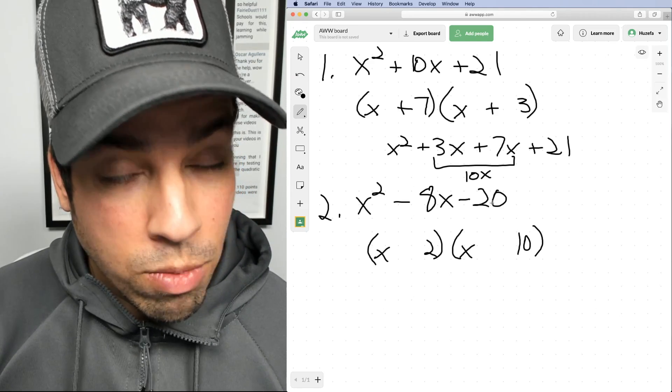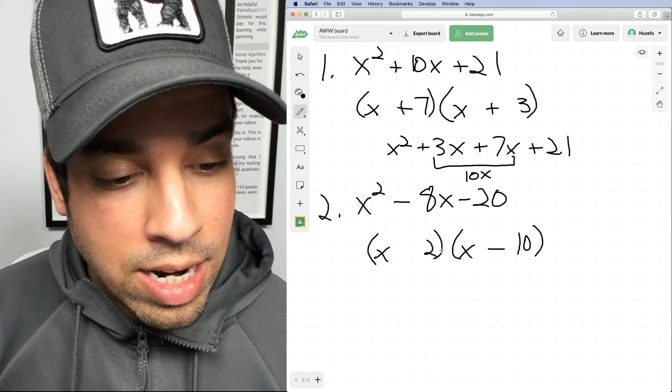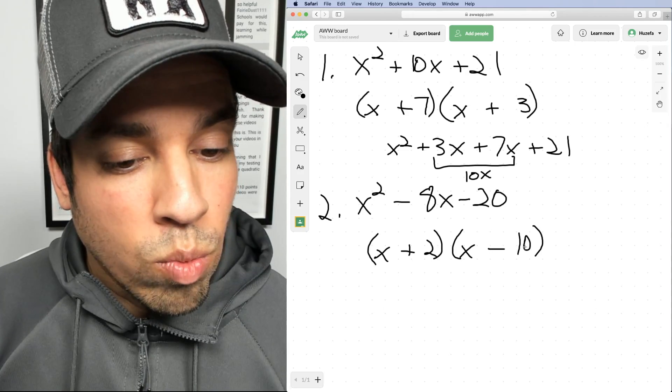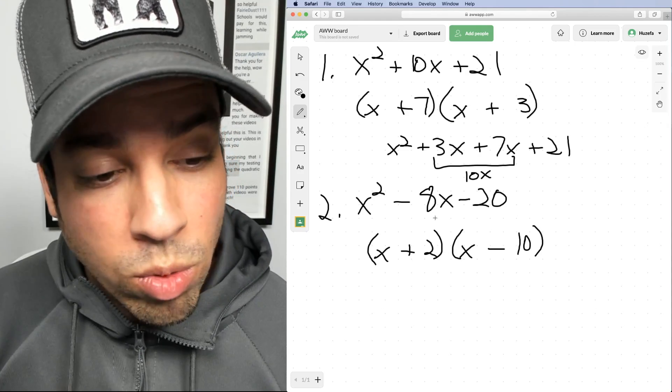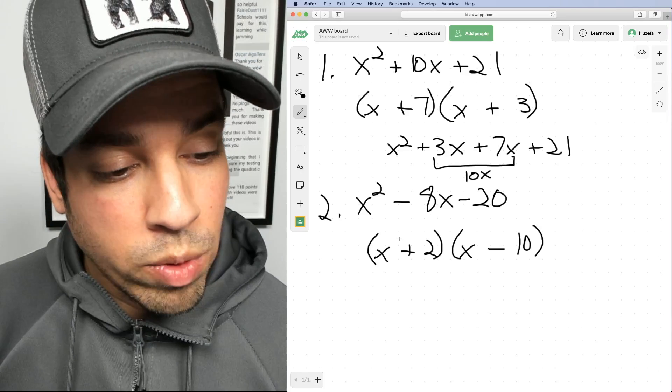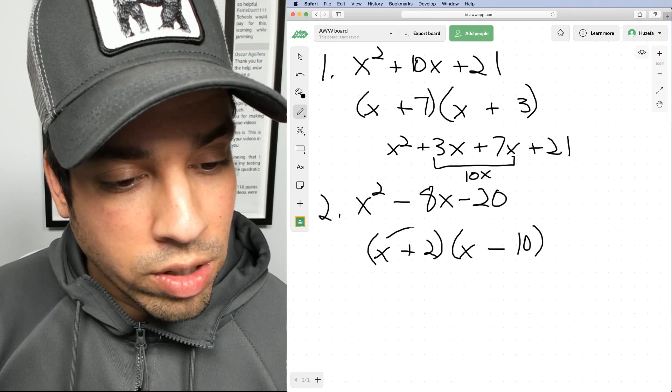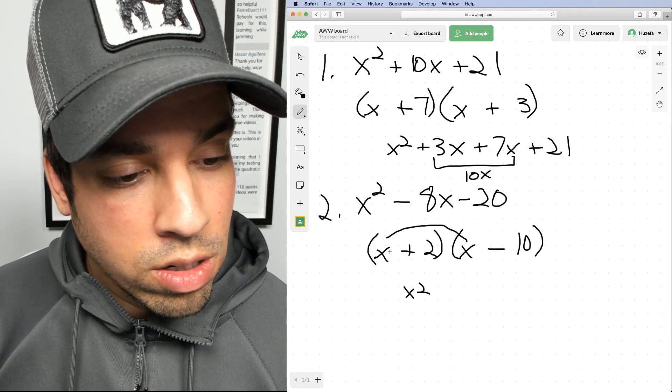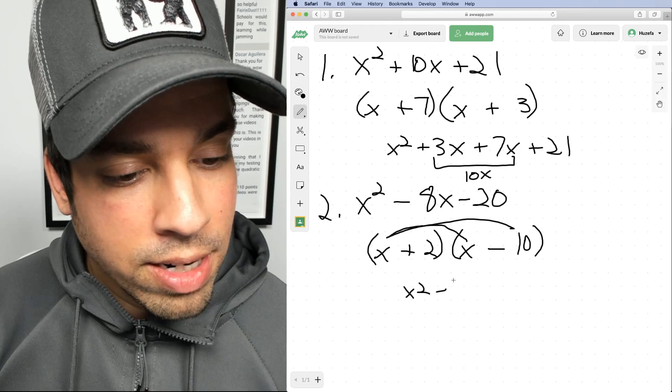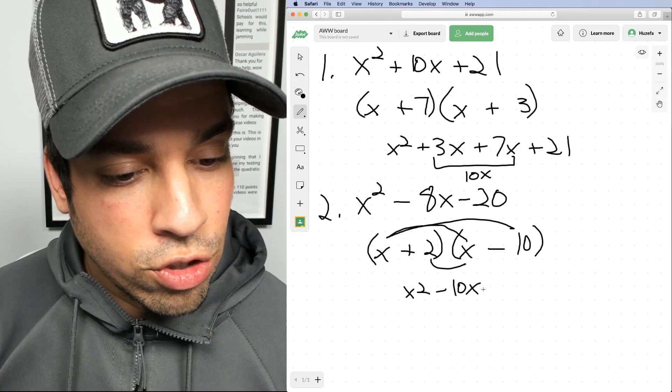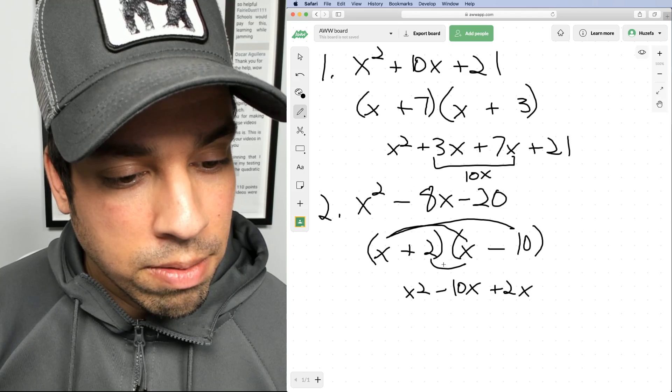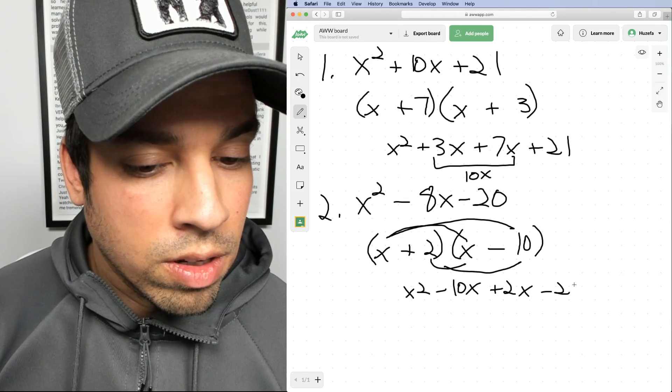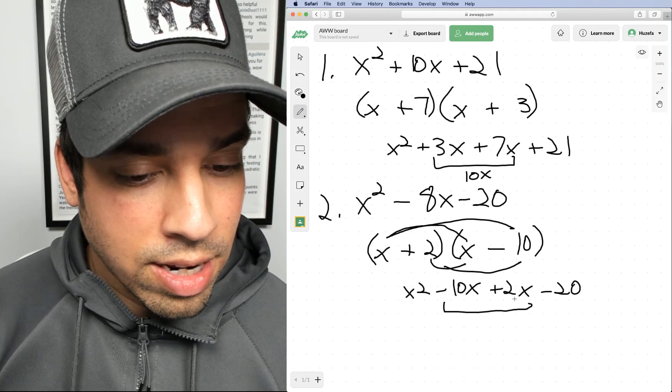What about 10 and 2? So if we've got a 10 and a 2, they multiply to 20. Maybe let's make the 10 negative and the 2 positive. What does negative 10 plus 2 equal? It equals negative 8. We've got our winner. Just to double-check, let's FOIL it. We've got x squared minus 10x plus 2x minus 20. These guys combine to give us negative 8x.